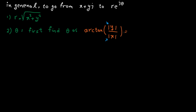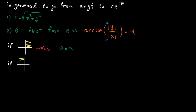Let's call this angle alpha. Now, if the number is in the first quadrant — i.e. x positive, y positive — theta is equal to alpha. If it's in the second quadrant — i.e. x negative, y positive — the angle is pi minus alpha.